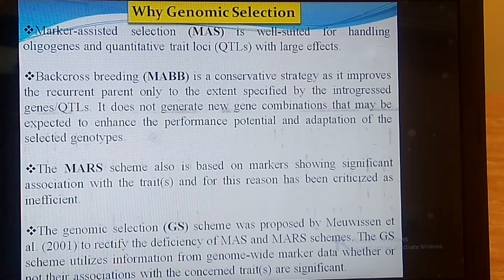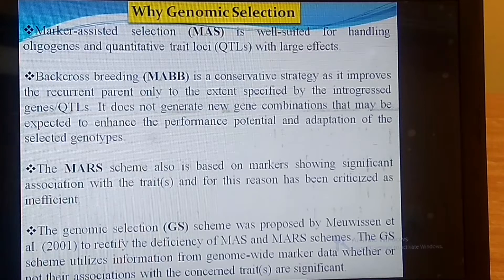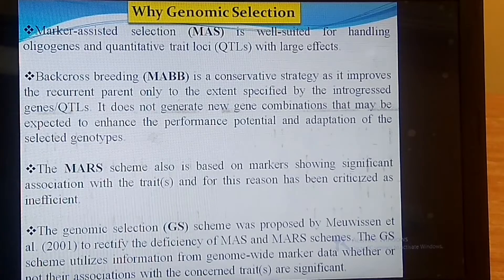Marker-assisted selection is not suitable for minor genes which have very small effects. We divide marker-assisted selection into two techniques: MABB (marker-assisted backcross breeding) and MARS (marker-assisted recurrent selection).